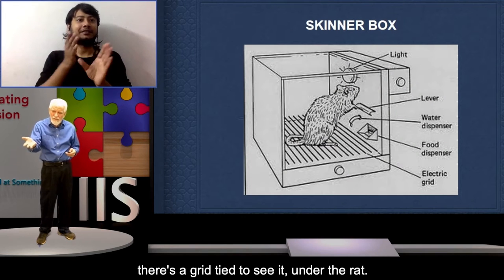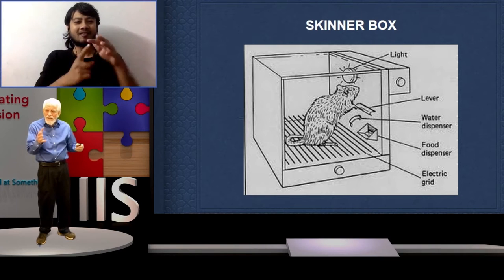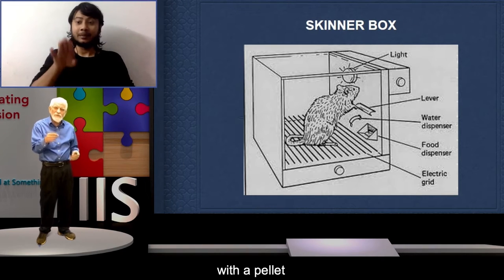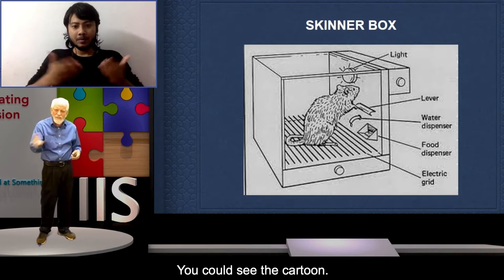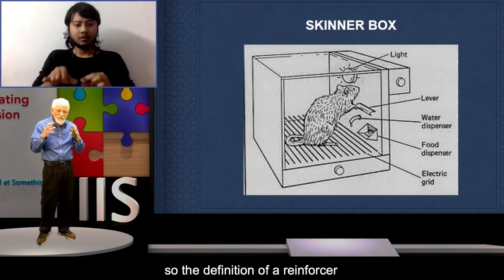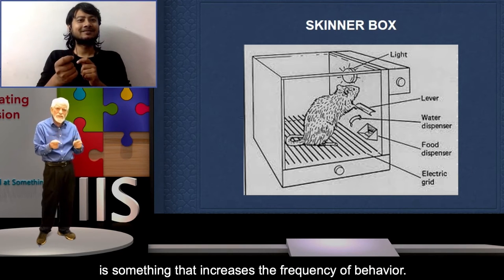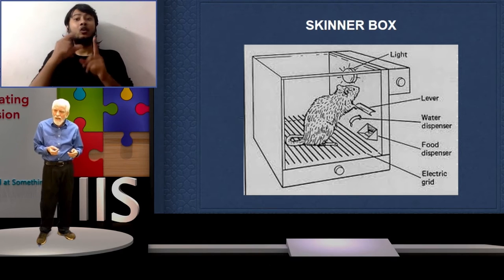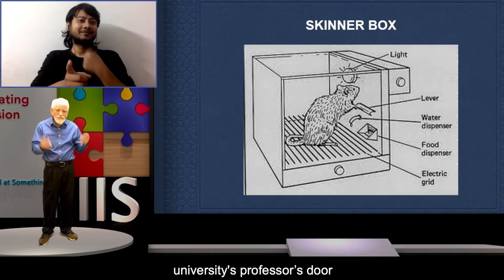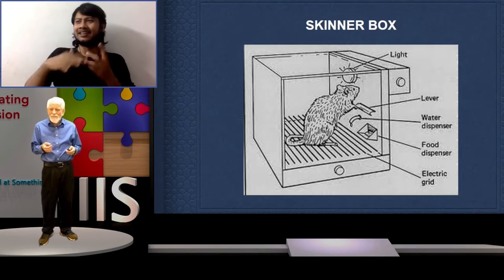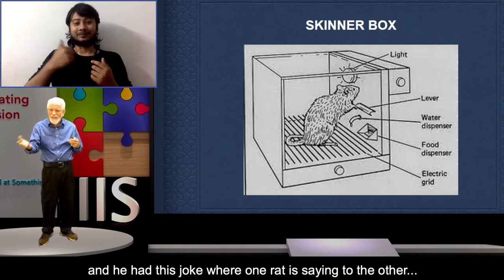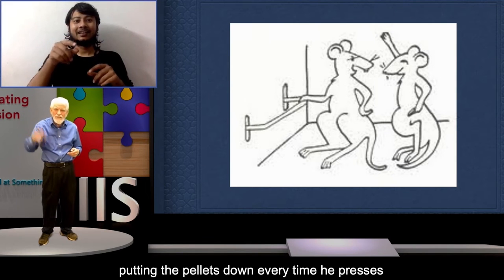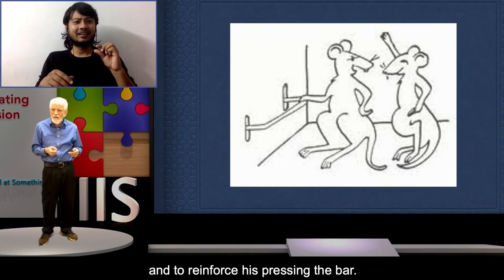In the Skinner Box, there's a rat, and the rat would press a lever and get rewarded with a pellet, which would increase the behavior of pressing the lever. The definition of a reinforcer is something that increases the frequency of behavior. He developed a reward-and-punishment model — there's an electric grid he used for punishment.